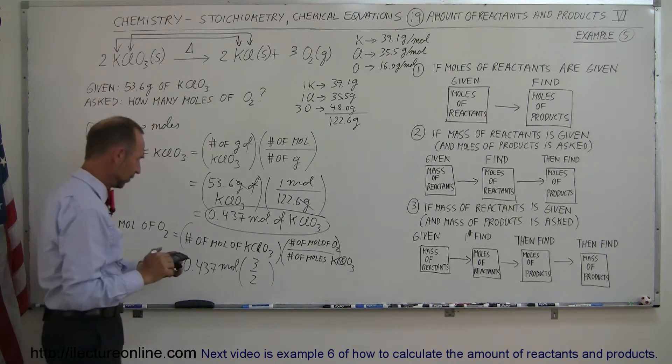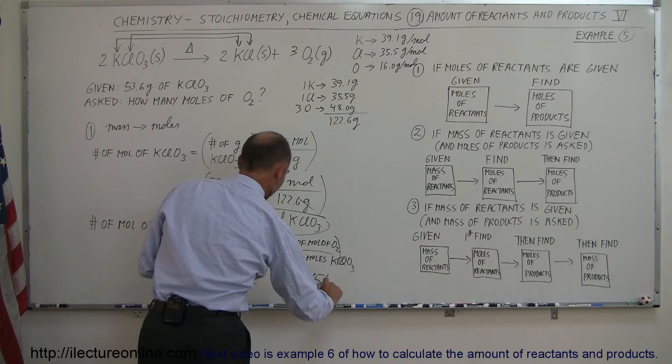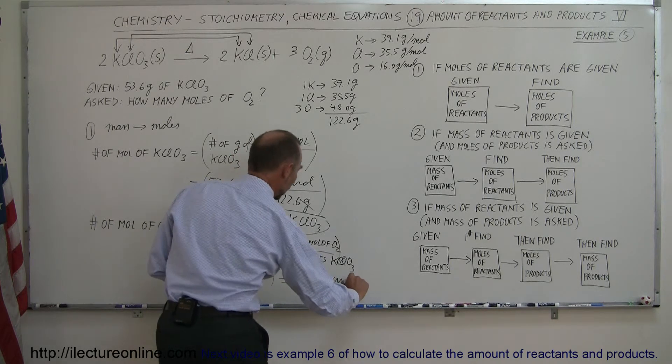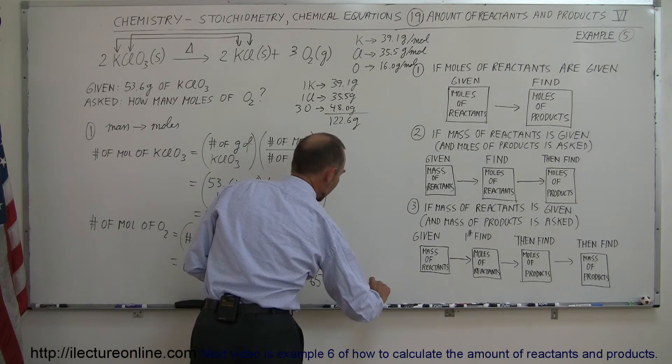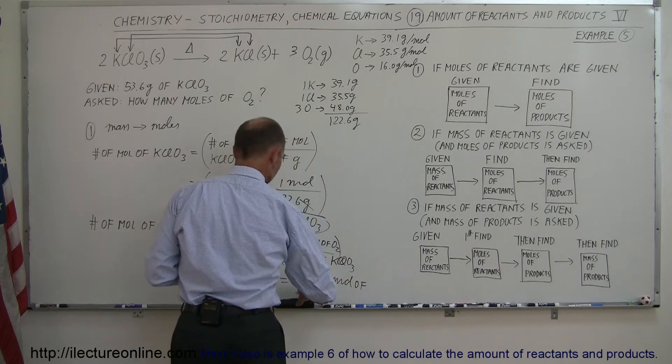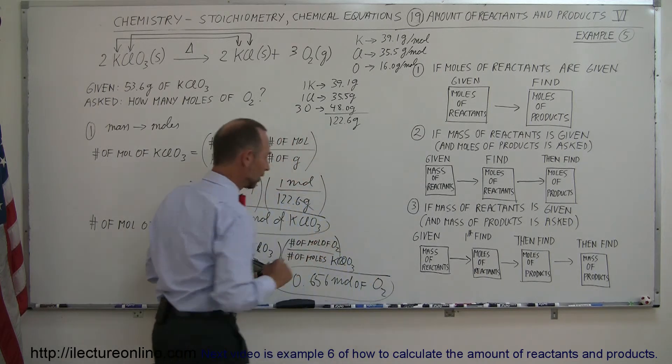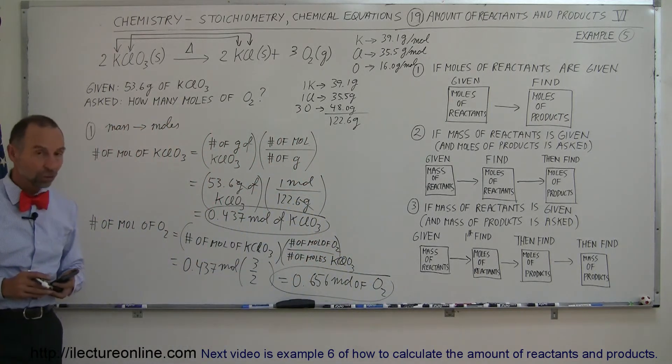and we end up with 0.656 moles of potassium, oh, of not potassium chlorate, but the end product, which is oxygen gas. And there is the answer in this case. So this was a two-step process.